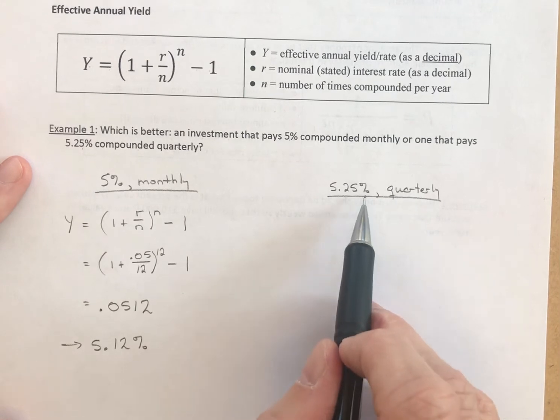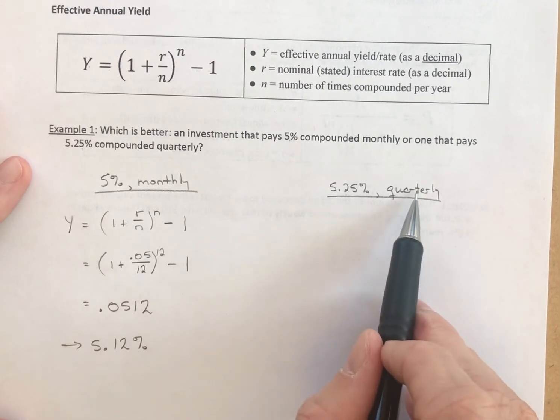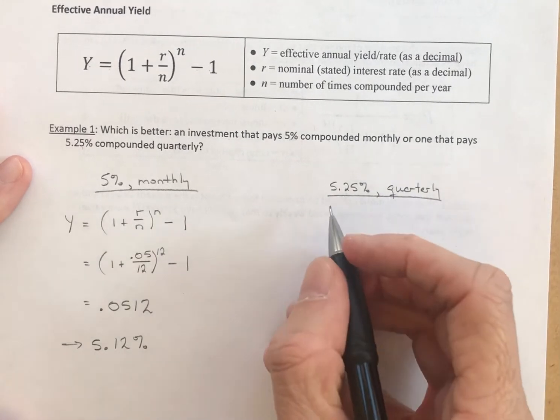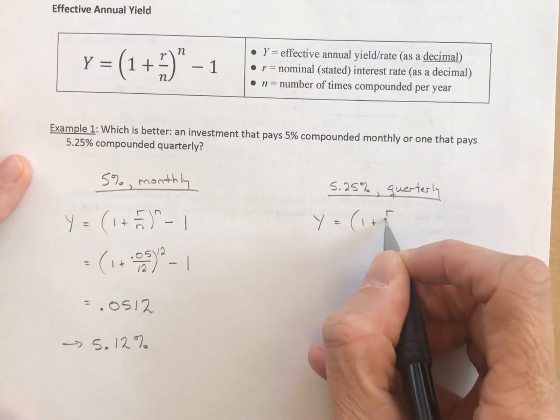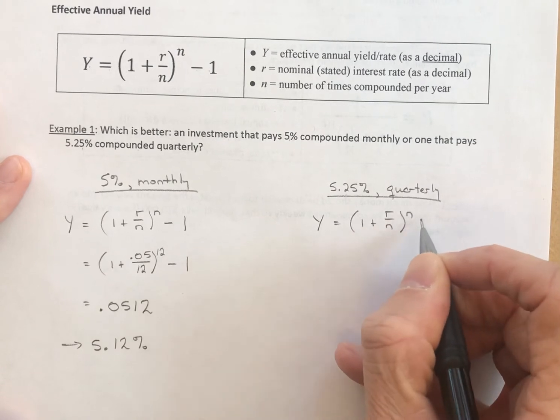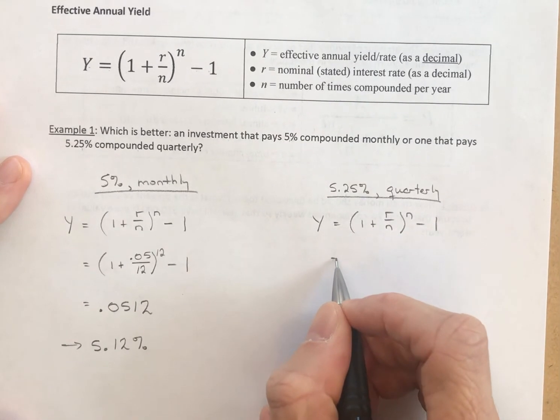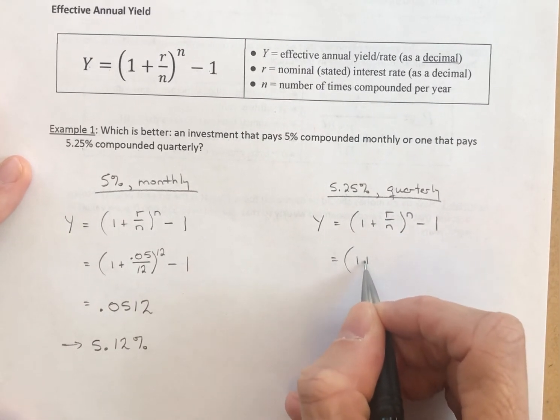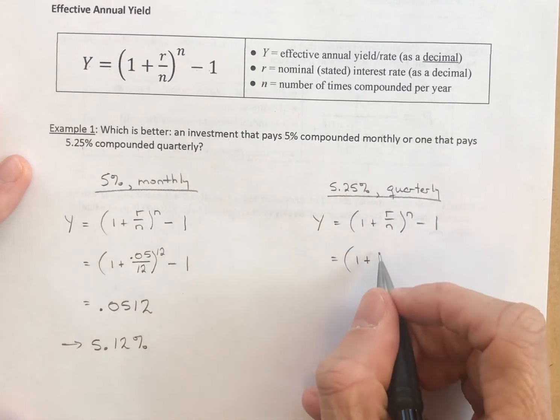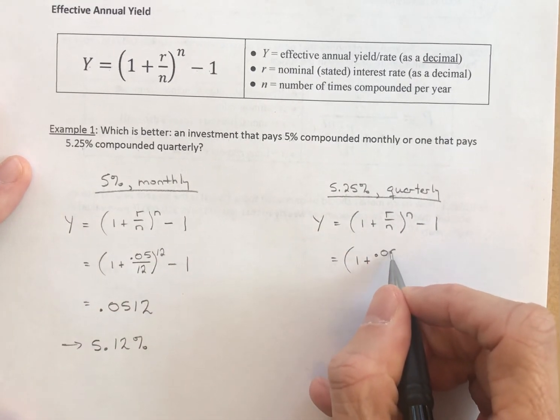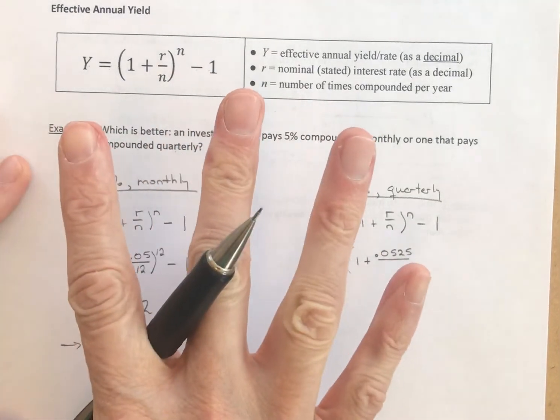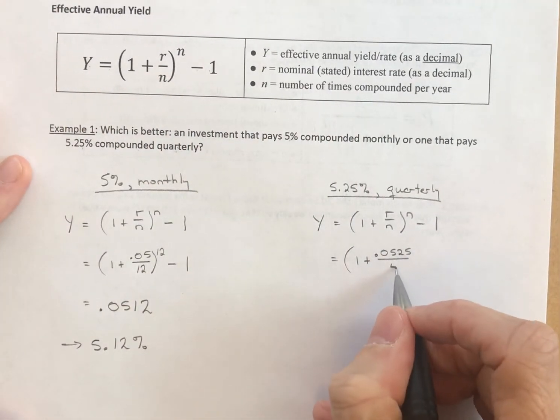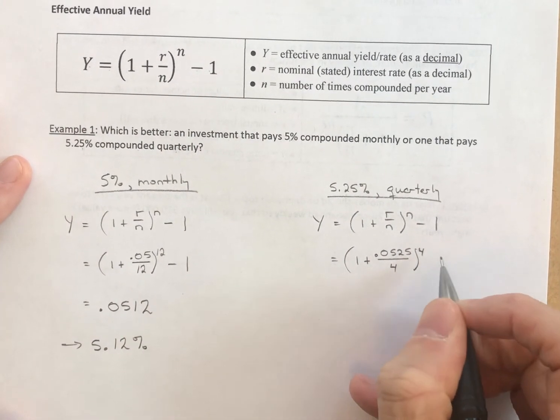Let's see how this compares to a higher rate that's compounded less frequently. Back to our formula: 1 plus r over n to the n minus 1. Let's substitute. 1 plus the rate, the rate is 5.25% as a decimal, 0.0525. This one is compounded quarterly, which we know is 4 times a year. So there's a 4 goes here, and the 4 goes here.